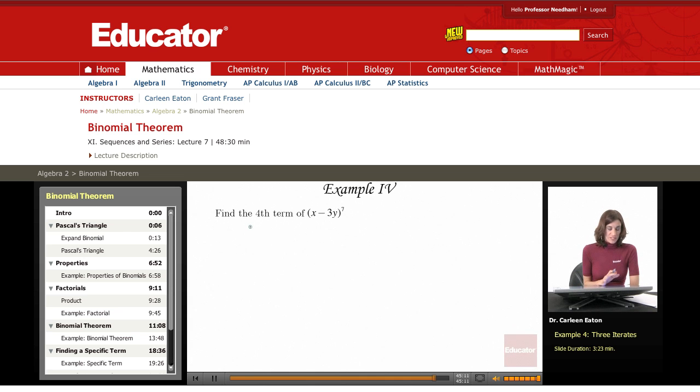We're asked to find a specific term this time, not the entire expansion. I just want to find the fourth term of x minus 3y to the seventh.